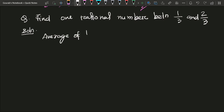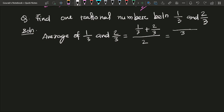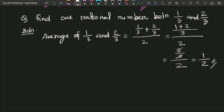The average of 1 by 3 and 2 by 3 will be equal to the sum of the numbers: 1 by 3 plus 2 by 3, divided by 2. In the numerator the LCM will be 3, giving us 1 plus 2 divided by 2, that is 3 by 3 divided by 2. The 3s cancel and we get 1 by 2. So 1 by 2 lies between 1 by 3 and 2 by 3 by the average method.